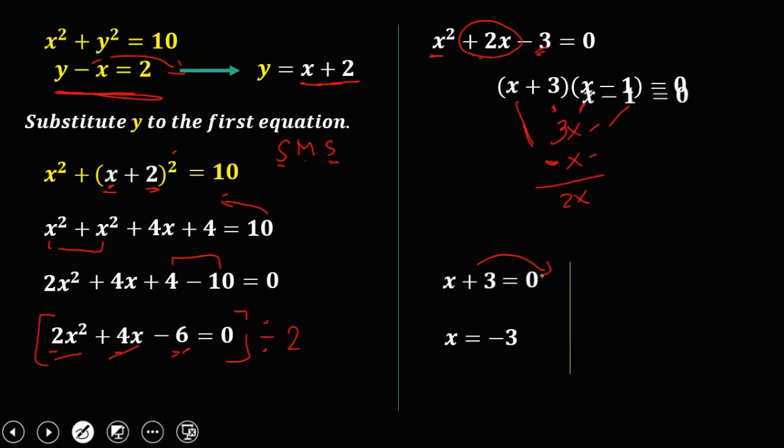And the other one, x minus 1 equals 0. Transpose to solve for x. So x now is positive 1. So these are the values of x, negative 3 and positive 1.